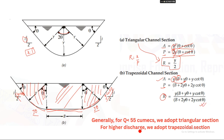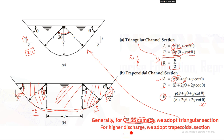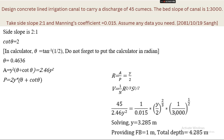Generally, for Q less than 55 cumecs we adopt a triangular section, and for higher discharges we prefer a trapezoidal section. Since the given discharge is 45 cumecs, which is less than 55, we prefer a triangular section.